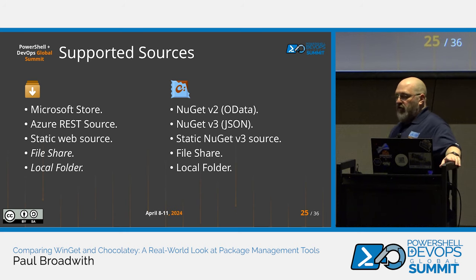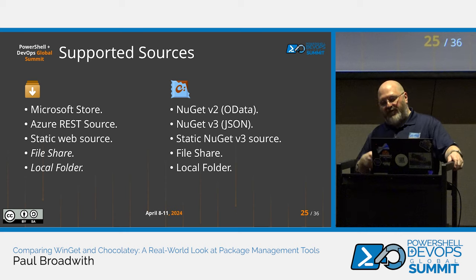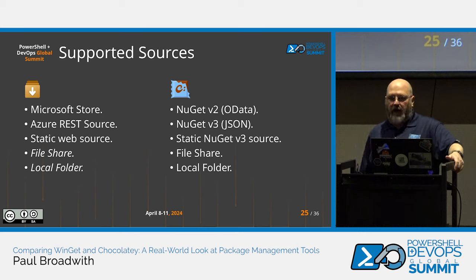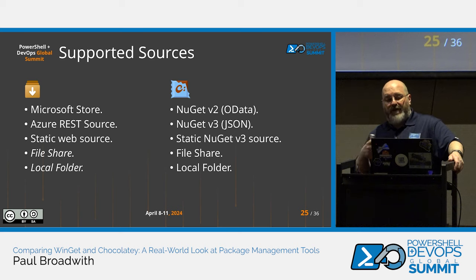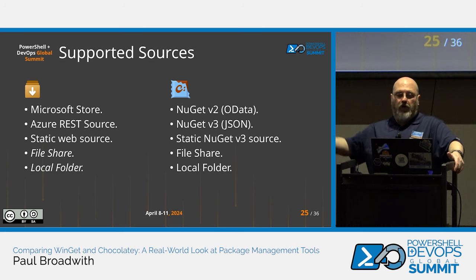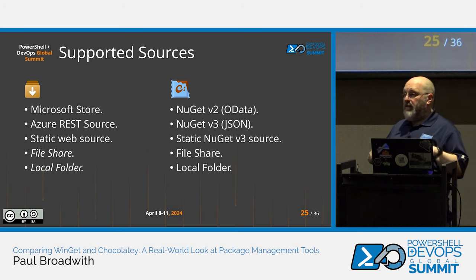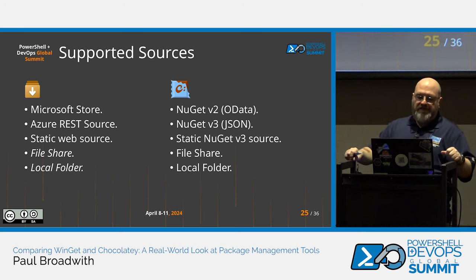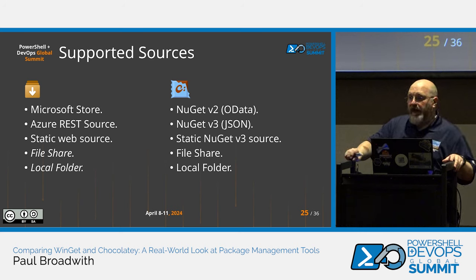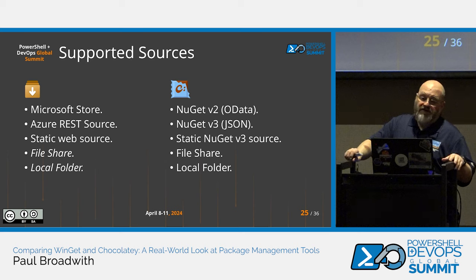Supported sources: for WinGet, there's the Azure REST API source — a REST API that WinGet queries. If you're setting up a package repository, that's what you need. The code lives in the 'winget-cli-restsource' repository but it's very much tied to Azure, using Azure databases. There was talk of converting it to AWS with mixed results. The officially supported way is Azure — great if you're in that ecosystem, potentially problematic if you're not. There's also the Microsoft Store source, which requires accepting terms and conditions.